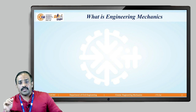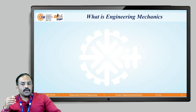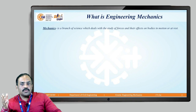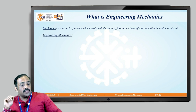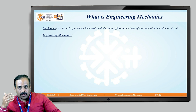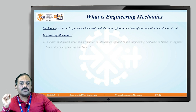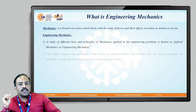In the last lecture, I told you what is meant by engineering mechanics. First, I told you what is meant by mechanics — it is a branch of science which deals with the forces and their effects on a body in motion or at rest. Then I gave you at least four definitions of engineering mechanics, one of which is: the study of different laws and principles of mechanics which are applied to engineering problems.